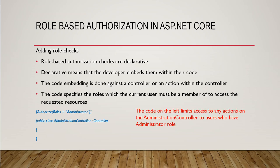Here is a snippet of an Administration controller class which derives from Controller in MVC. At the top there is an Authorize attribute with Roles set to 'Administrator'. This code limits access to any actions on the Administration controller to users who have the Administrator role — any user with the Administrator role can access the entire controller and all its action methods.